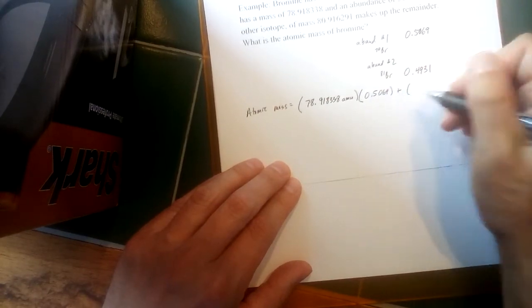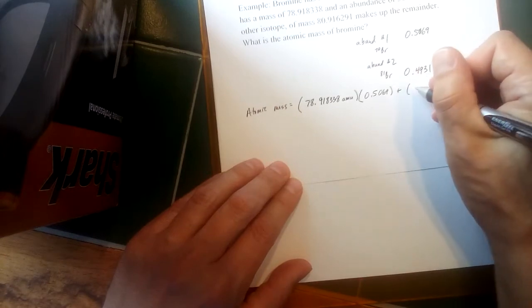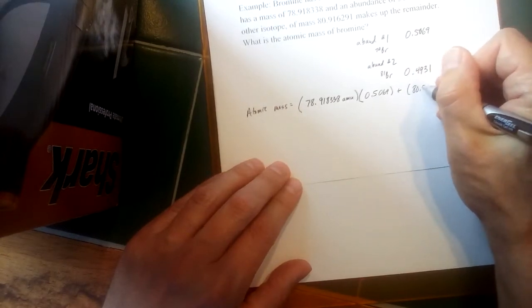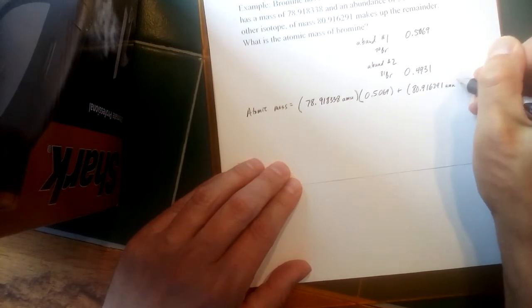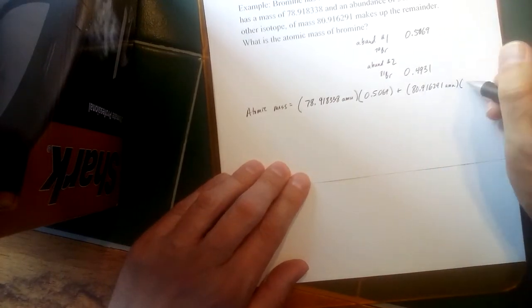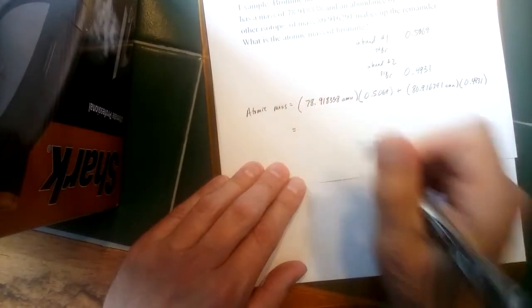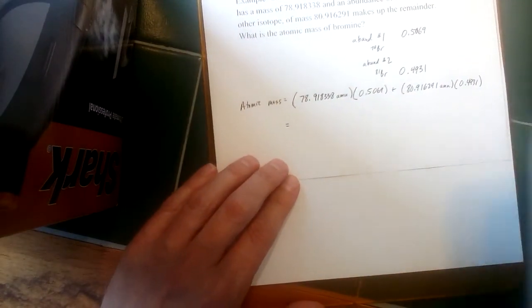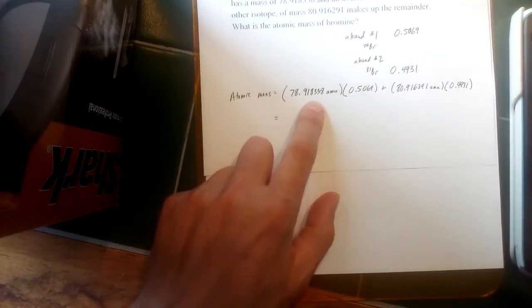And then we'll add a second term that describes the second isotope of the bromine-81. So that's 80.916291 atomic mass units times 0.4931.